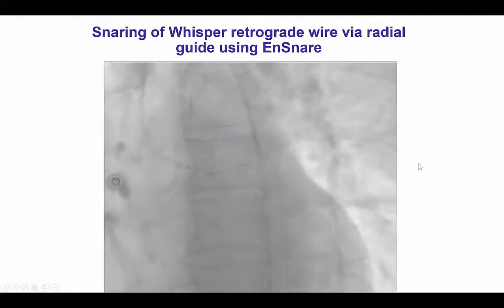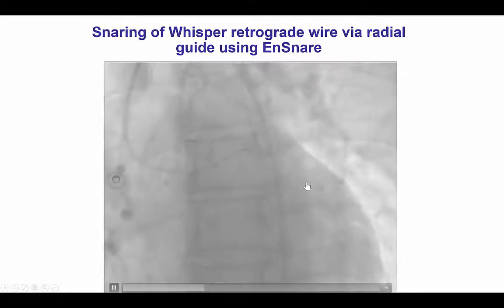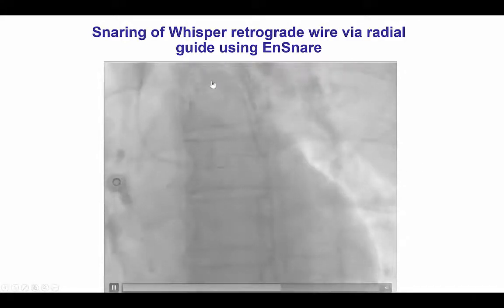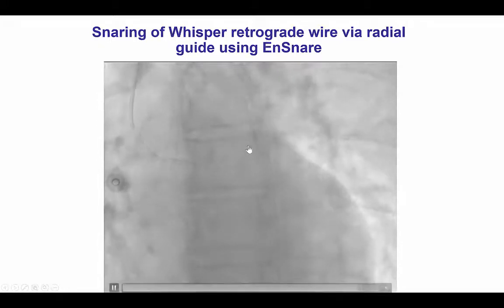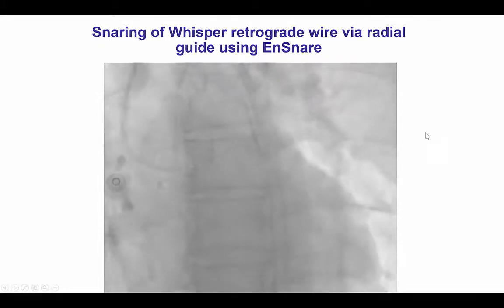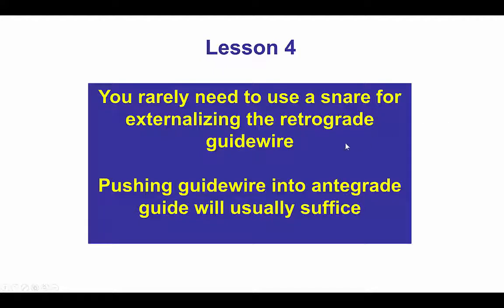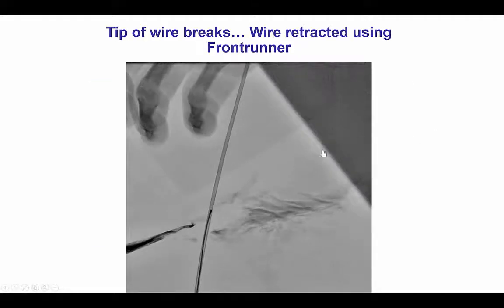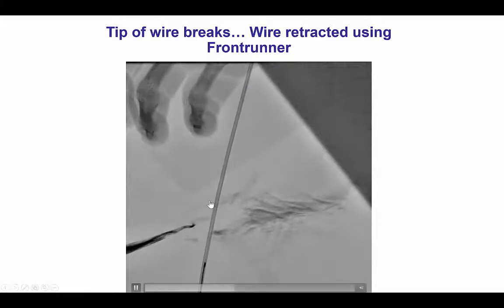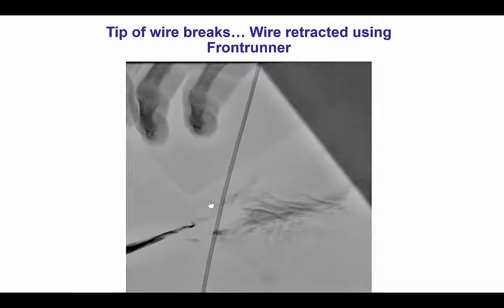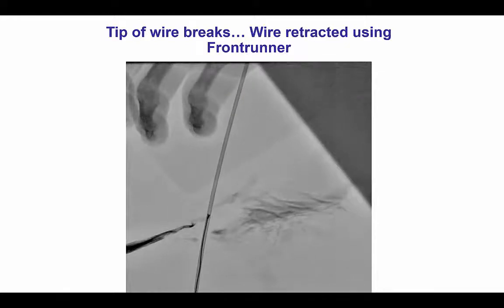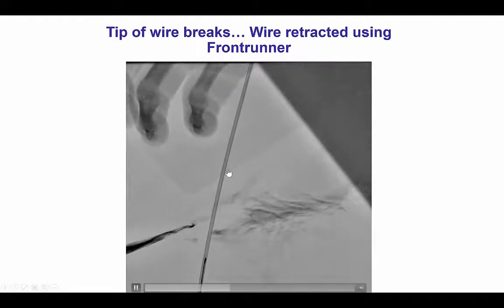Unfortunately, we were unable to advance an antegrade wire. Therefore, we decided to snare the retrograde wire — which was a 300 cm Whisper wire — into the antegrade guide catheter, and that was achieved using an EN Snare. At the time, we didn't know that we don't pull the snare to externalize the wire, but instead you push the guidewire through the antegrade guide. So it was not surprising that the wire was extremely hard to pull back. There was constant tension and movement of the guides that had to be adjusted constantly, and eventually the snare came off the wire, which had not yet exited from the antegrade guide catheter.